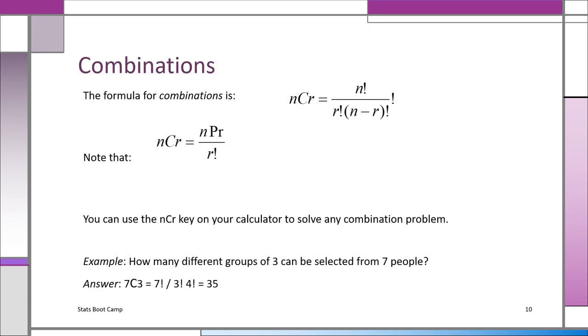This is the formula for combination. N, C, not P, now it's a C. NCR is N factorial over R factorial times N minus R factorial. Notice it's almost the same as the permutation formula, except now you're dividing, you're shrinking it in fact, by dividing it by R factorial. So that's why we see that NCR is NPR over R factorial. You don't have to worry about all this. You have the NCR key on your calculator to solve any combination problem. Make sure you have a calculator that has that key.